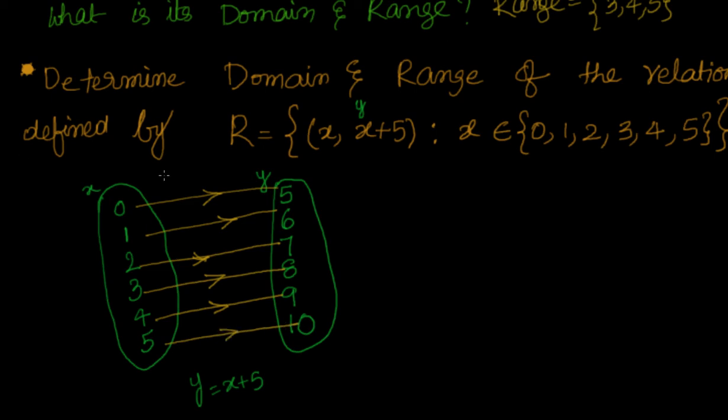Now what is the domain of this? Domain is nothing but all the elements which are part of the relationship, all the x values. So I can directly say domain = {0, 1, 2, 3, 4, and 5}.